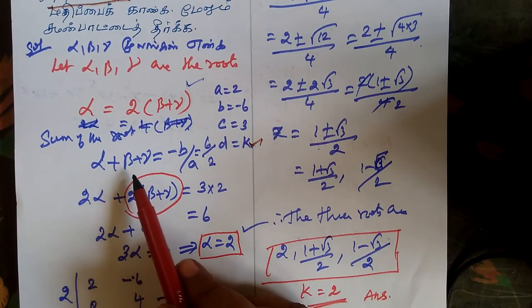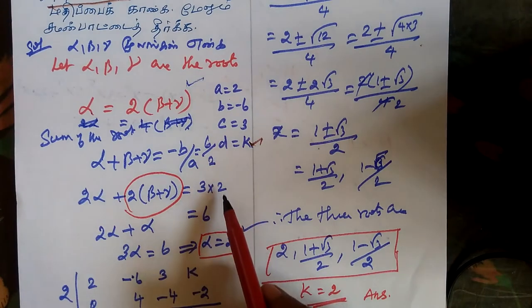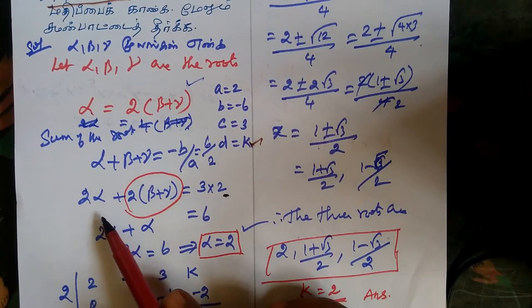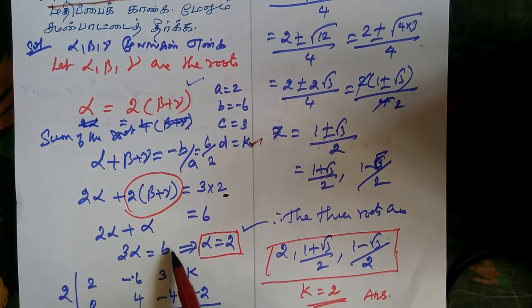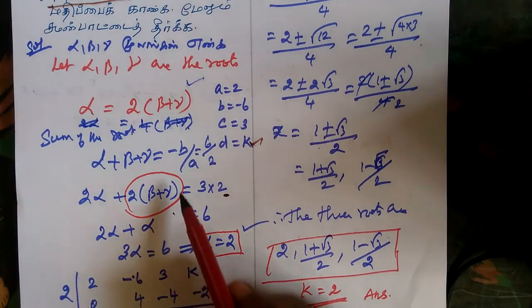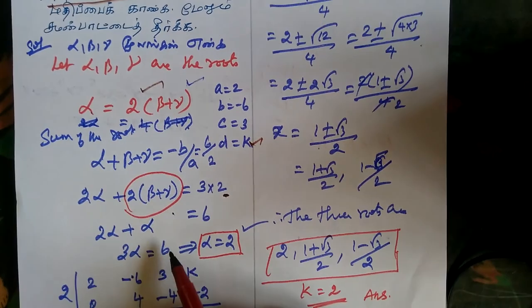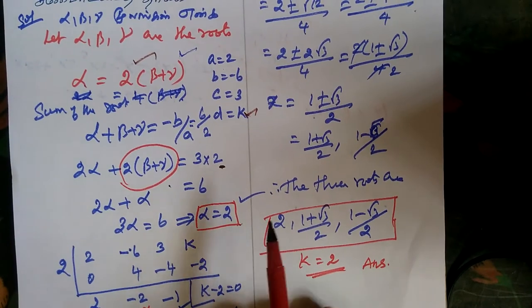So 2α + 2(β + γ) equals -3. Multiplying throughout by 2, we get 2(β + γ). Since α equals 2(β + γ), substituting gives 3α equals 6. Therefore α equals 2.